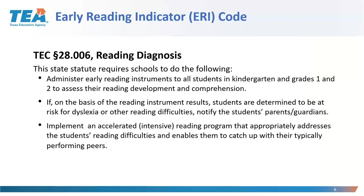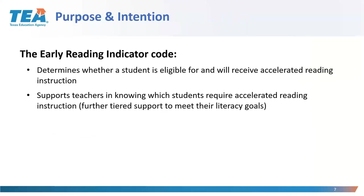The third requirement is that after determining whether a child requires accelerated reading instruction — which is really tiered support and intervention — you implement an accelerated reading program that appropriately addresses the student's reading difficulties and enables them to catch up with their typically performing peers. So really, you're administering a valid and reliable tool, analyzing those reports — perhaps with other formative data — to determine if a child needs accelerated reading instruction, and then planning and implementing for that.